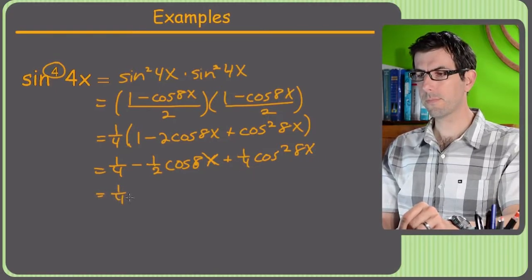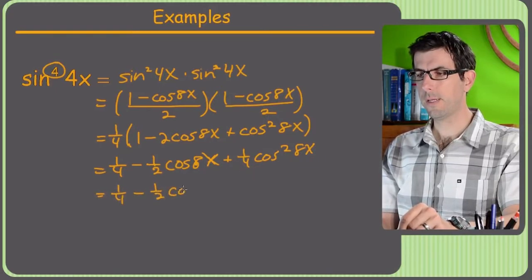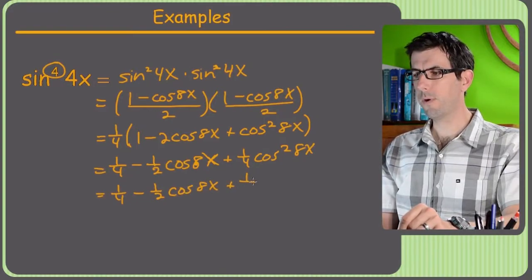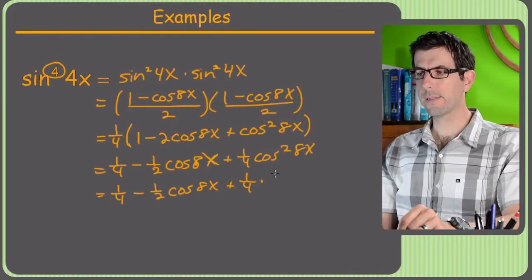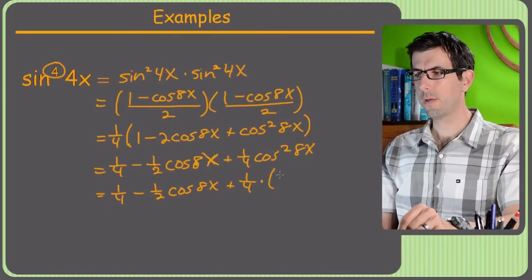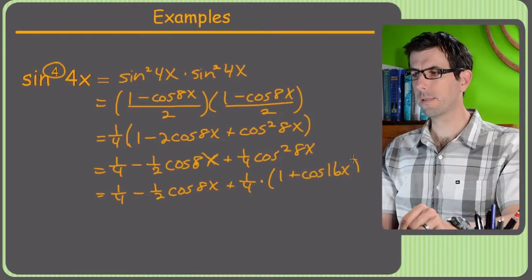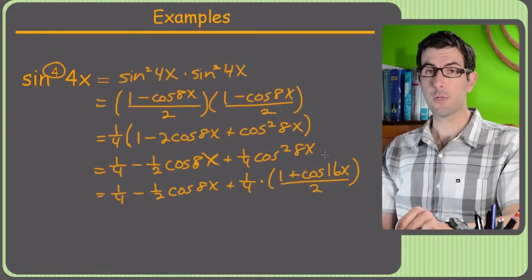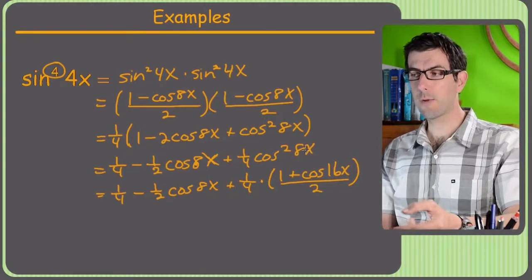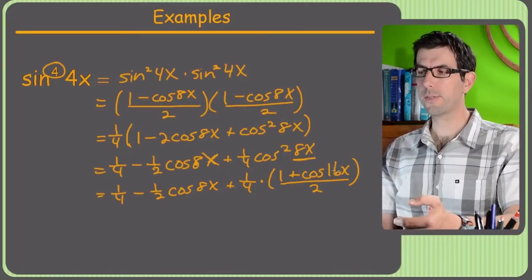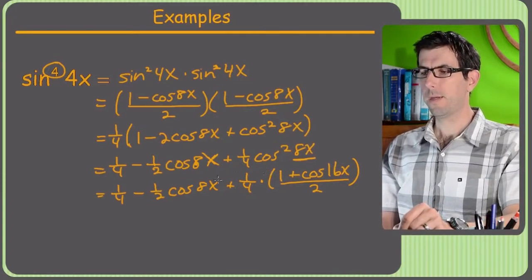And then we got 1 fourth times cosine squared of 8x is going to be 1 plus cosine of 16x over 2. Because remember, we have to, if we have a cosine squared, we have to double the argument here. So 8x goes to 16x, but that allows us to reduce the exponent to 1.